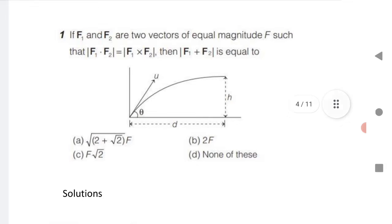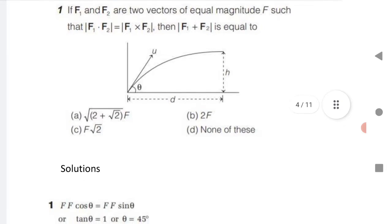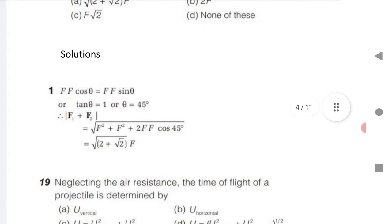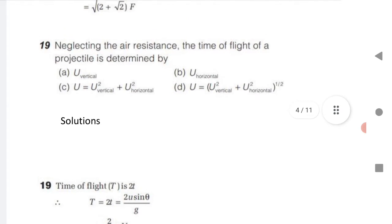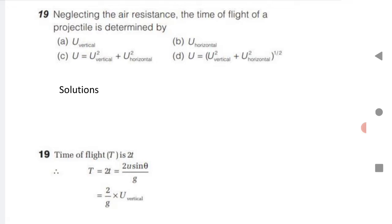New pattern question: if F1 and F2 are two vectors with equal magnitude F and F1 dot F2 equals F1 cross F2, find |F1 + F2|. Since dot product equals cross product: F² cos theta equals F² sine theta, so tan theta equals 1, giving theta equals 45 degrees. The magnitude of F1 + F2 equals under root of (F² + F² + 2F² cos 45°). Substitute to get the answer.